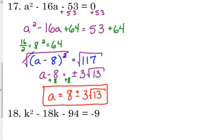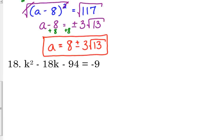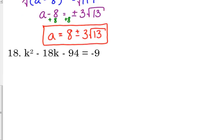Let's do another one before I turn you loose. Let's look at 18. We've got to move the constant to the other side. There's already a constant there, but that's okay. So we're going to add the 94 to move it over. K squared minus 18k. Leave our space. Negative 9 plus 94 is 85.